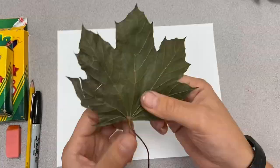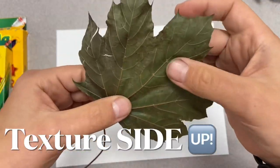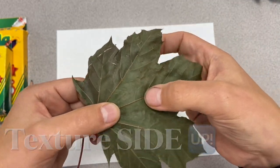I got my big maple leaf on here. And you want to start with the side that has the veins exposed, so the side that you can feel the texture on them.